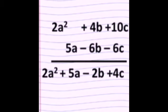Next, plus 4b minus 6b. Both signs are different, so we subtract 6 minus 4 equal to 2b. We write the negative sign because 6 is greater. Then we write plus 5a and 2a².